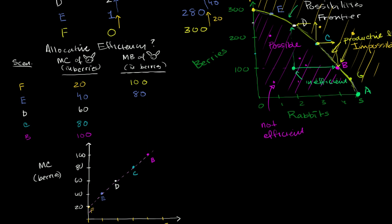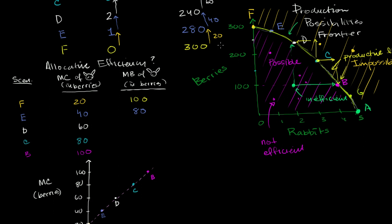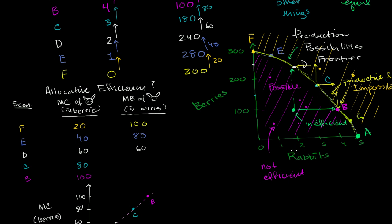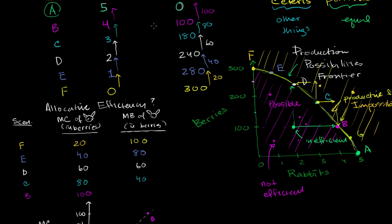Then you go to scenario D. We already have two rabbits and even fewer berries, so we're willing to give even fewer berries for another rabbit. This is what we would pay to a convenience store, just based on our current preferences. Then in scenario C — it is subjective, based on this hunter-gatherer's preferences — they already have more rabbits and even fewer berries, so they'll pay even less. And finally scenario B: they have a good number of rabbits and even fewer berries, so they'd be willing to pay very little for an incremental rabbit.